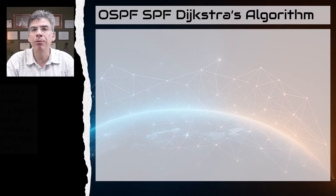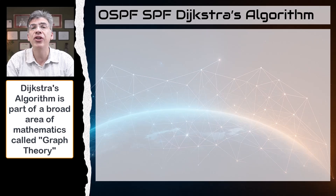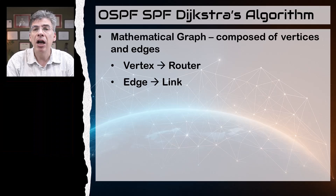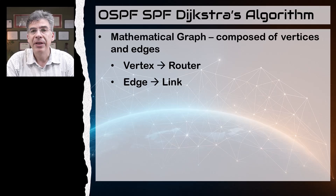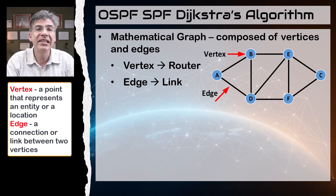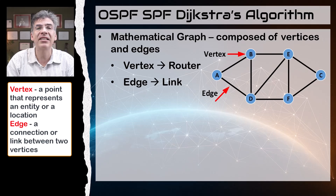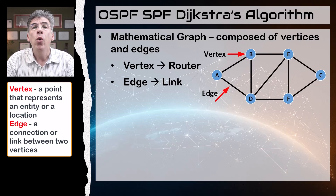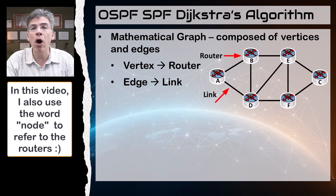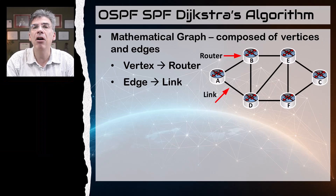This algorithm is a strictly mathematical process within the realm of what is known as graph theory, so we'll be using a mathematical construct called a graph. A graph is actually very similar to a network of routers. It's composed of vertices and edges, but because we're looking at this in the context of a network topology, we'll be using the terms routers and links.